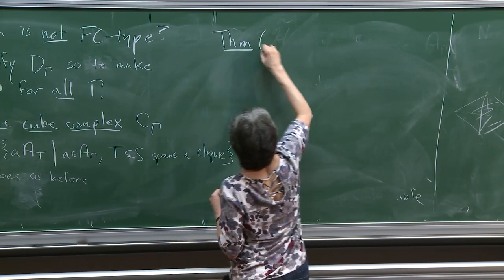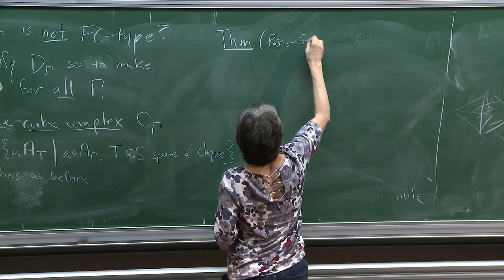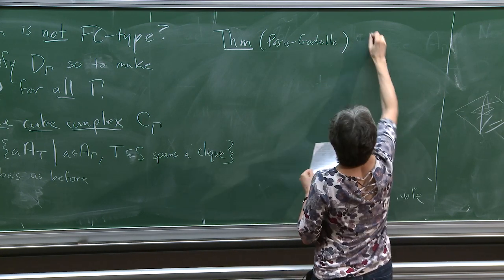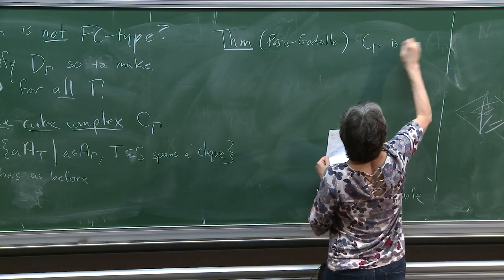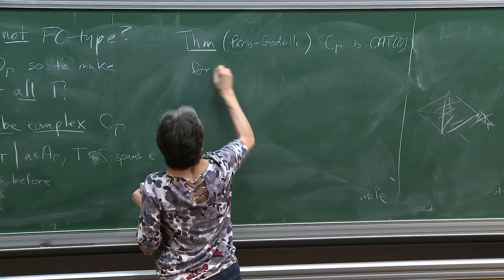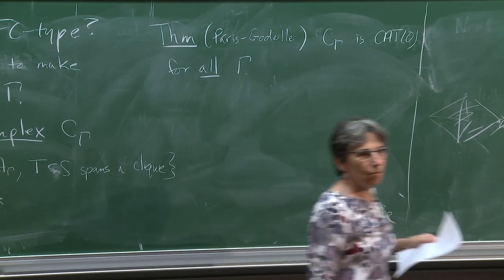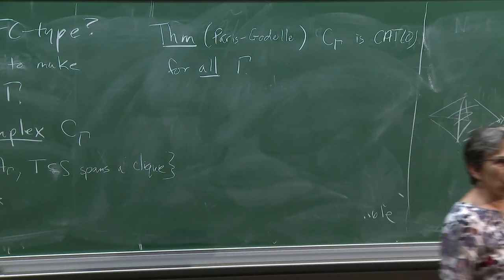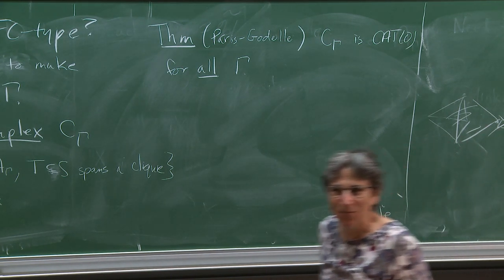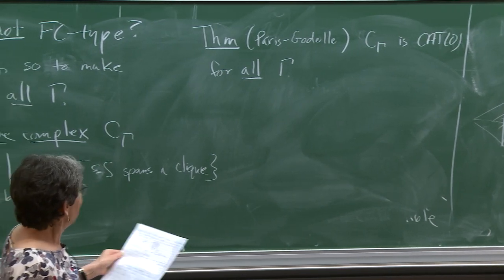Theorem — first proved by Charney and Morris-Wright — : C(γ) is CAT(0) for all γ. No matter what the finite labeled graph is.